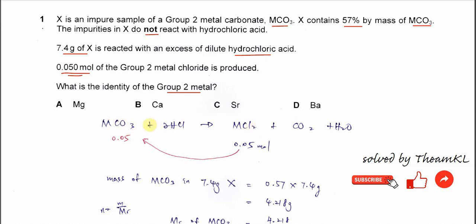From here, we know that the ratio of the Group 2 carbonate and the Group 2 chloride is 1 to 1. Because in this question, given 0.05 moles of Group 2 metal chloride produced, we know it must be the same for the metal carbonate, so the metal carbonate must be 0.05 moles.